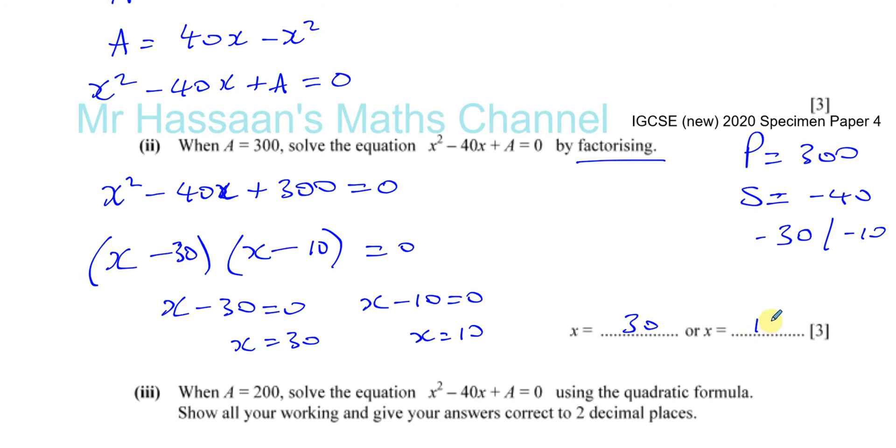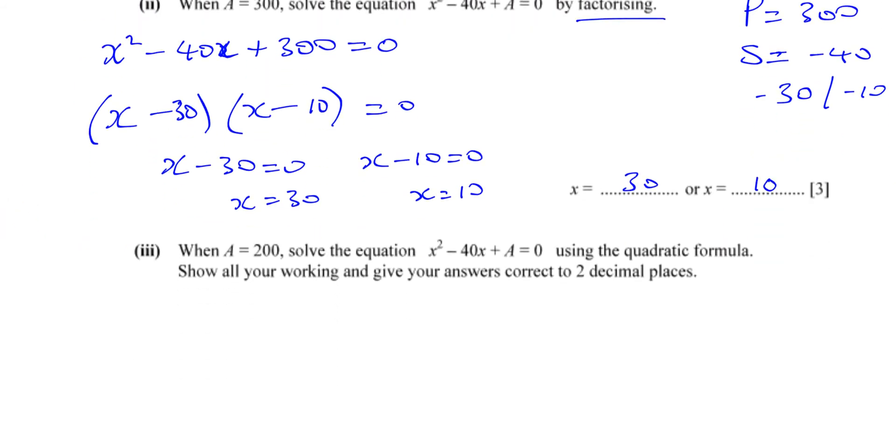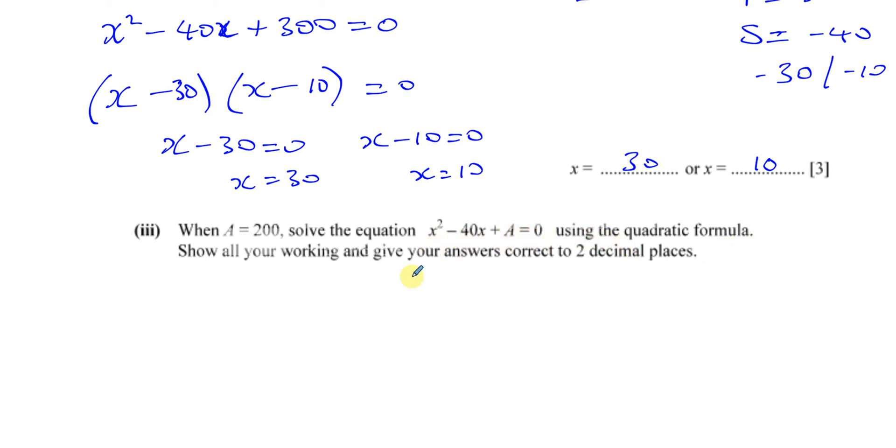Then this is when a equals 200, solve the equation x squared minus 40x plus a equals zero using the quadratic formula. Show all your working and give your answers correct to two decimal places. So in this case now, you're going to have x squared minus 40x plus 200 equals zero. So this time they've told you specifically to use the quadratic formula. And the quadratic formula is as follows. And you need to know it. It's not going to be given to you in the IGCSE Cambridge exam. So it's minus b plus or minus the square root of b squared minus 4ac all over 2a. Now this should be engraved into your brain and you should be able to repeat it like a parrot.